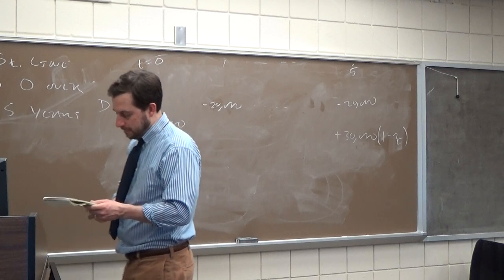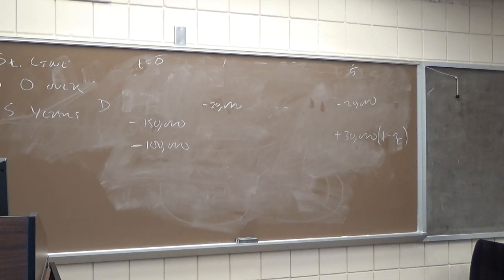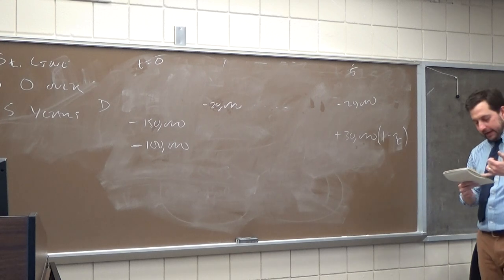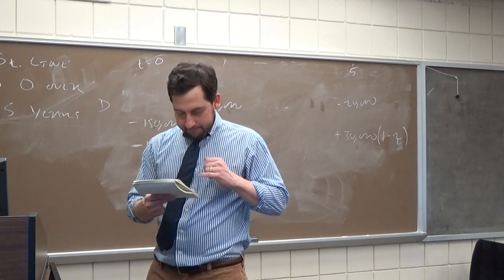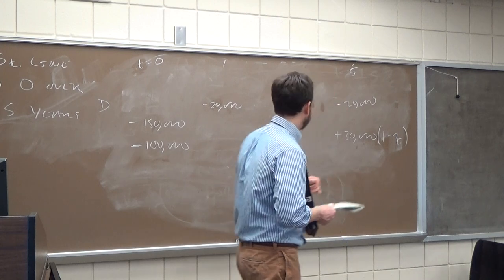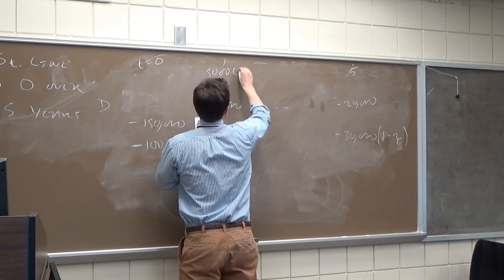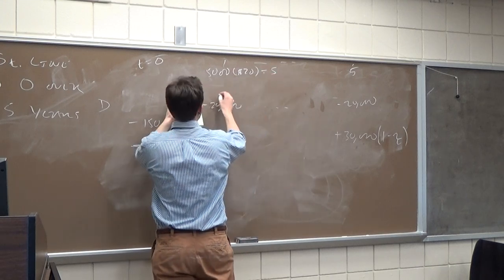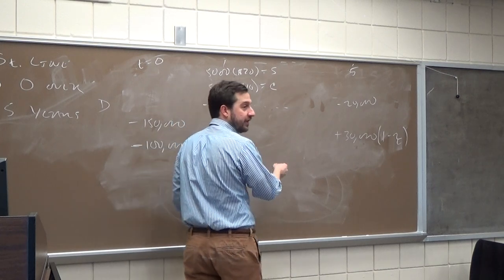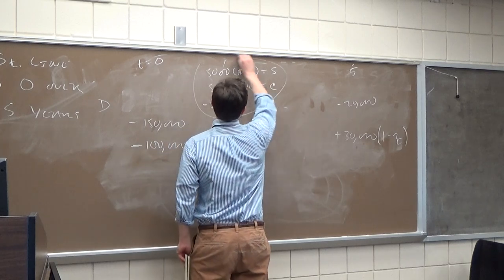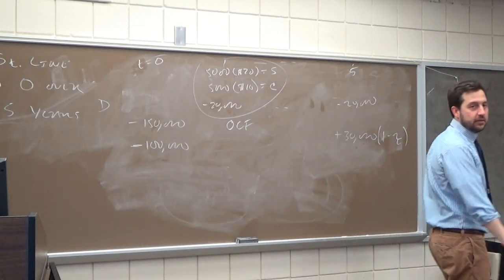Now for the operating cash flows: production is 5,000 units in year one, 8,000, 12,000, 10,000, and 6,000 in subsequent years. The price is $20 per bowling ball, so sales each year are units times $20. Production costs are $10 per bowling ball, so costs are units times $10. Combined with depreciation of $20,000 per year and the given tax rate, this gives us operating cash flow for each year.